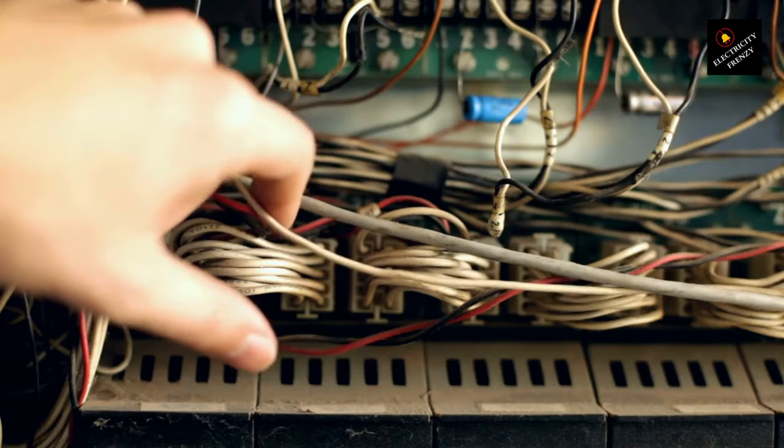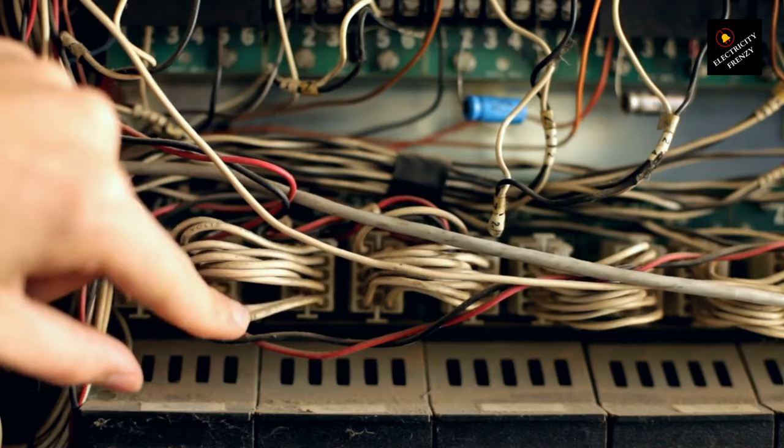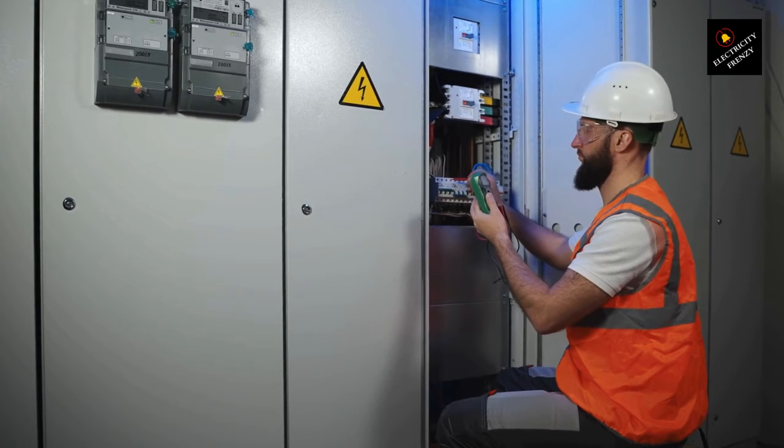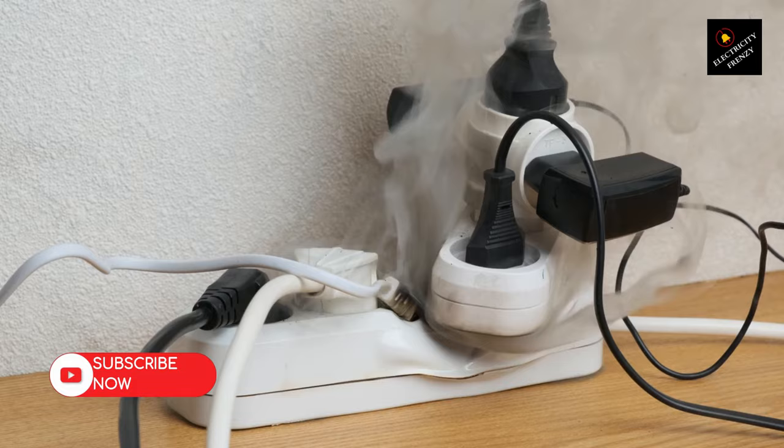Number four: Faulty wiring. Frayed or damaged wiring can cause a short circuit, leading to a breaker trip. Over time, wires can become frayed or loose, increasing the risk of electrical faults. The breaker trips to protect your devices and home from the excessive current and fire hazard.